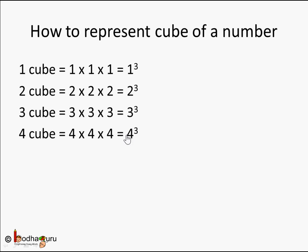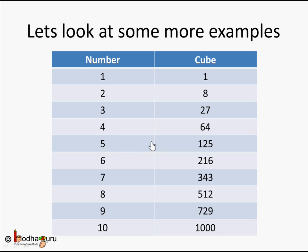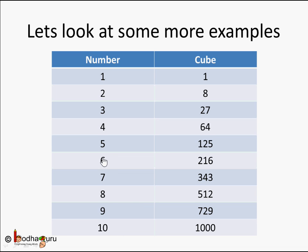Here are some examples with numbers and their cubes. 7³ = 7 × 7 × 7 = 343. 9³ = 9 × 9 × 9 = 729. A number multiplied by itself 3 times: 6 × 6 × 6 = 216.